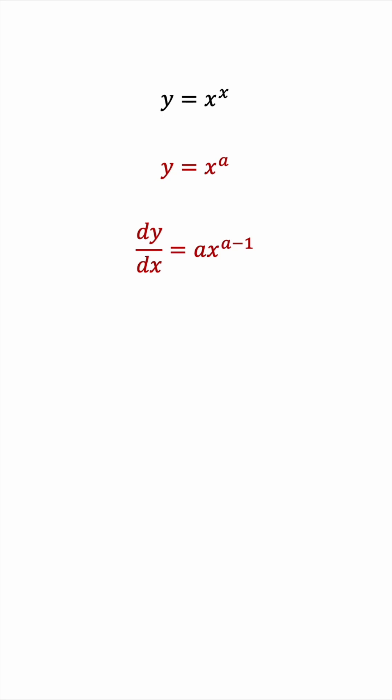On the other hand, if the base was a constant and our variable was the exponent, then the derivative would retain the exponential part but would only have an additional factor of the natural log of the base.